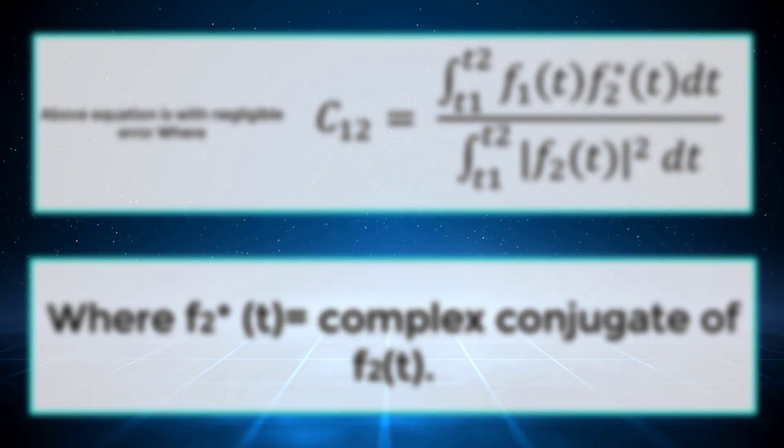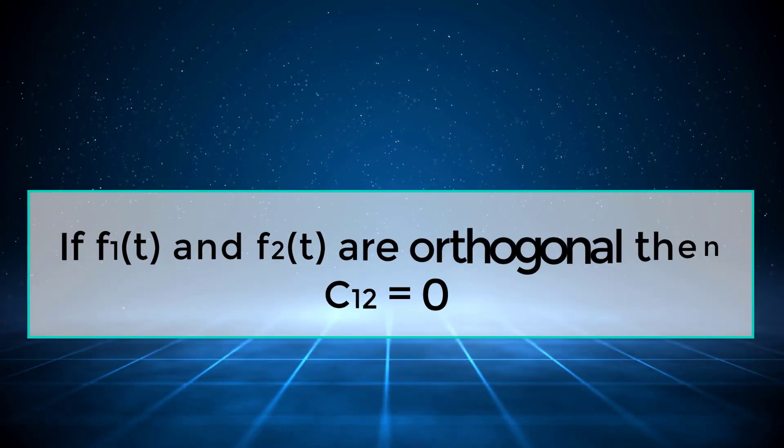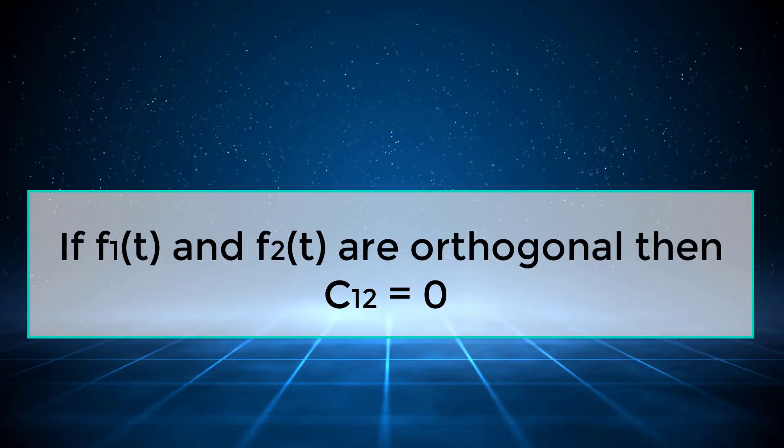If f1(t) and f2(t) are orthogonal, then c12 is equal to 0.